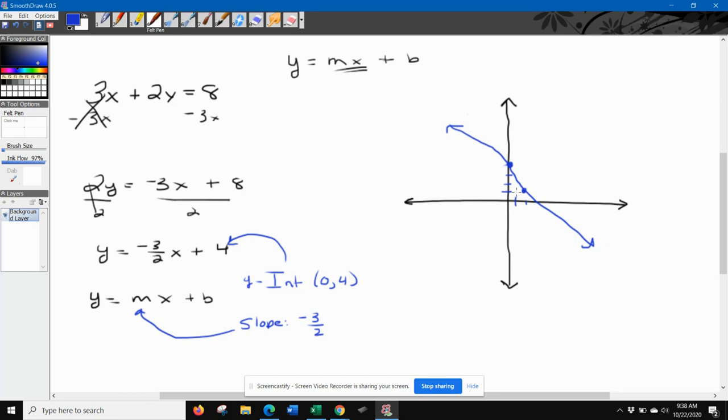Down 3, over 2. And it continues that pattern. Down 3, over 2. Down 3, over 2. Down 3, over 2. And if you want to go backwards, you can go up 3 and back 2, and up 3 and back 2. And that's the direction of our line.